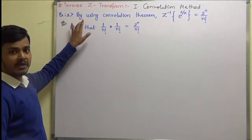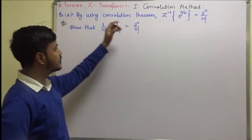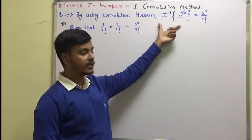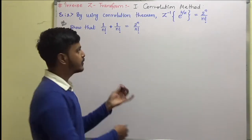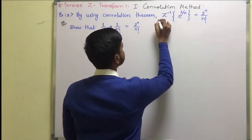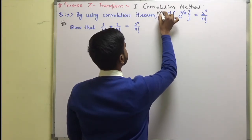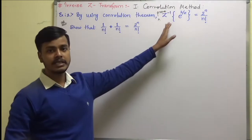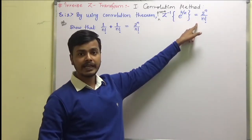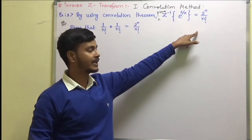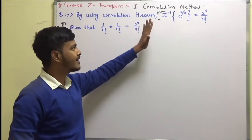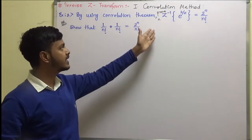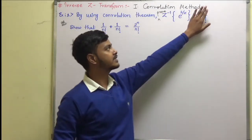We have to use the convolution theorem to prove that the z-inverse of e to the power 2/z is 2 to the power n upon n factorial. The question may be asked like this, or it may ask you to find the z-inverse of this by using the convolution theorem.